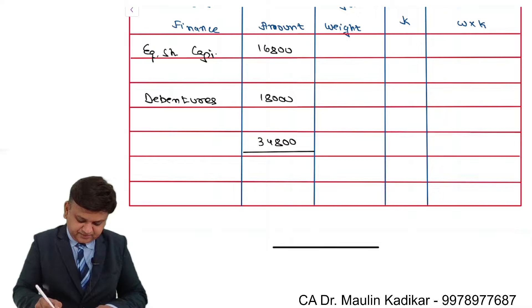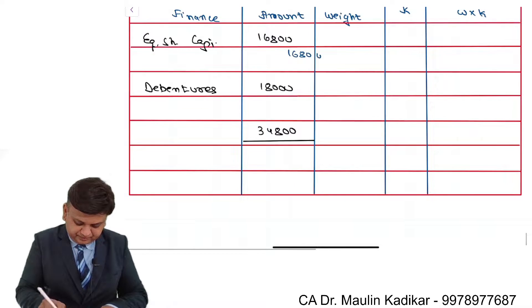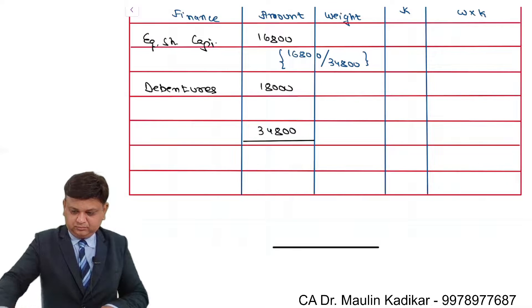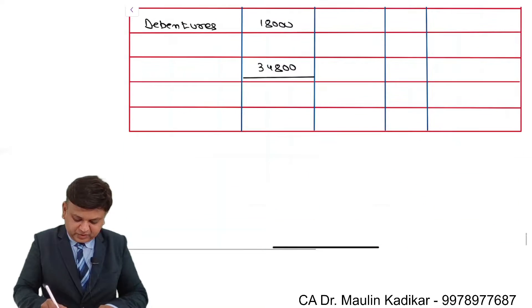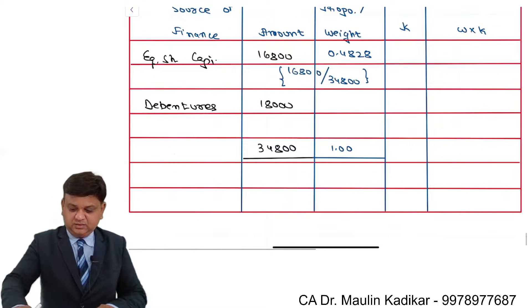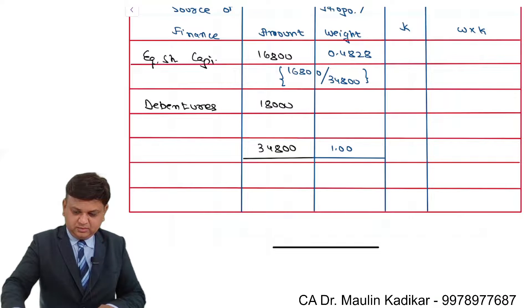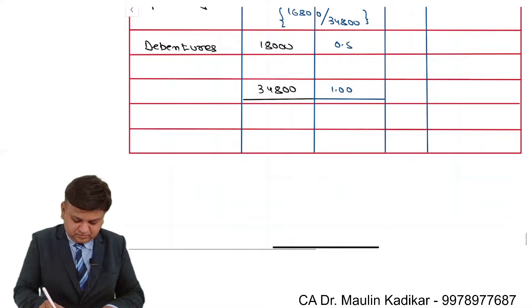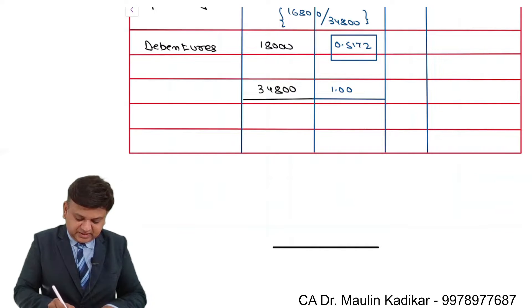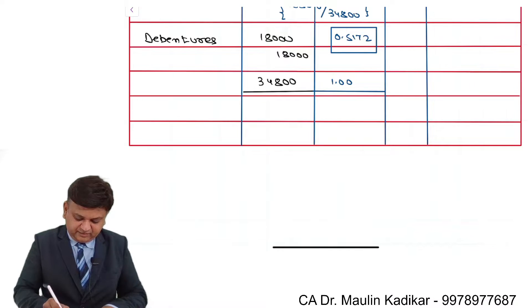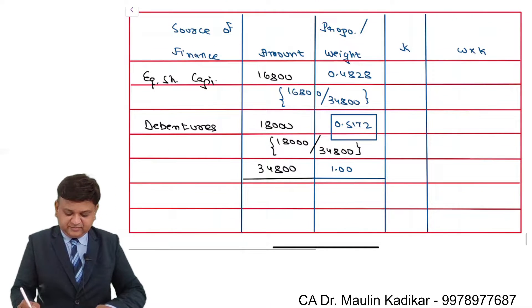We will compute the weight like this: 16,800 divided by 34,800 comes to 0.4828. The total weight is definitely one. For debentures, it is 1 minus 0.4828, that is 0.5172, calculated as the balancing figure. We understand it is 18,000 divided by 34,800.